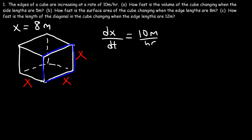How fast is the length of the diagonal of the cube changing when the edge lengths are 12 meters? Let's replace x with 12 meters. Let's draw the diagonal we're focused on — the distance between two opposite corners — and call it z. We're looking for how fast z is changing, so we need to calculate dz/dt.